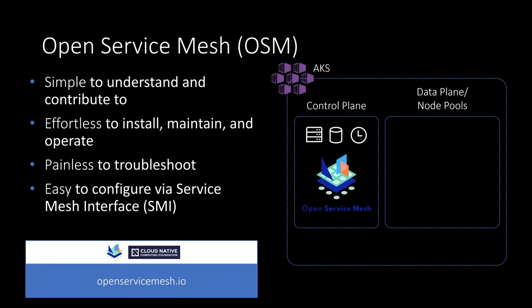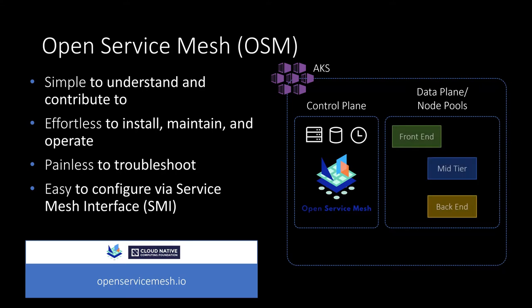Open Service Mesh is a lightweight, extensible cloud native service mesh that you can utilize to quickly secure the communications of your services running in the Kubernetes environment. OSM takes the approach of providing a simple way to get the core features and functionality needed without over-complicating the operational experience to secure your cloud native workloads.